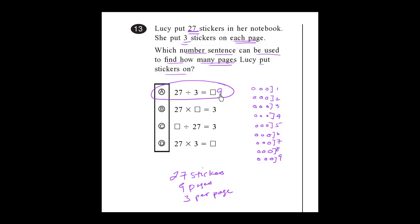Because if 9 is the missing number and we put it here, 27 times 9 equals 3. Well, that doesn't make sense. 9 divided by 27 equals 3. Well, that's going to be a fraction. So that doesn't make sense. And 27 times 3 equals 9. Certainly not. That's much bigger than 9. So this is the right answer. Letter A.